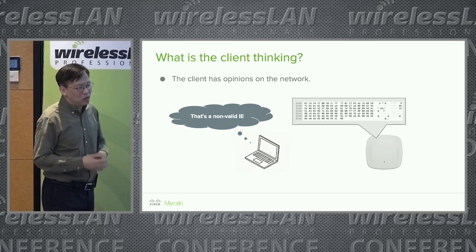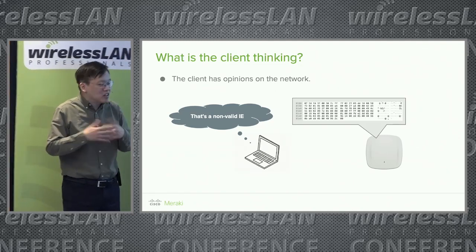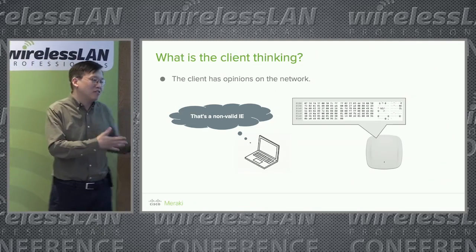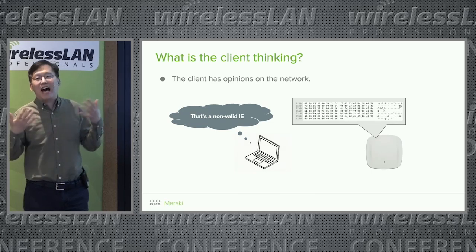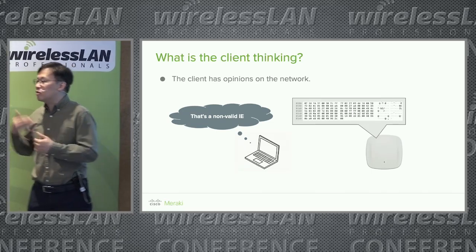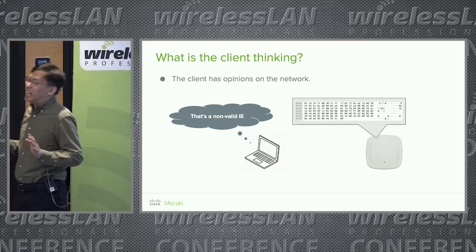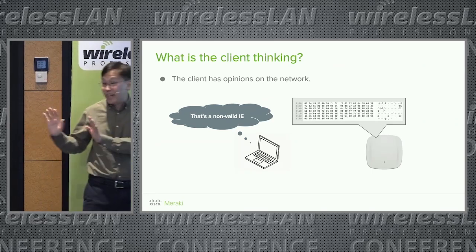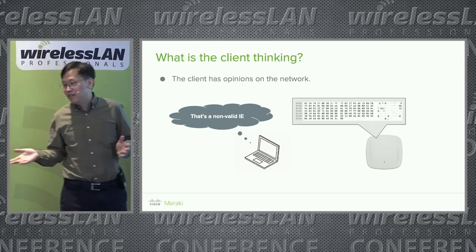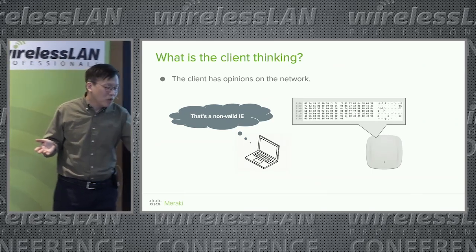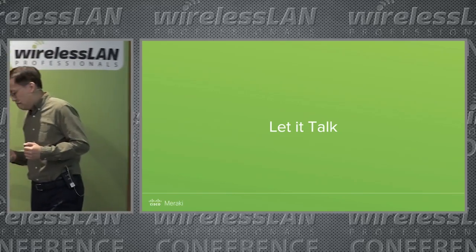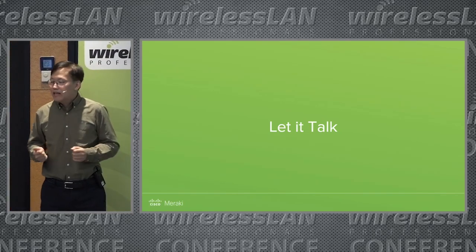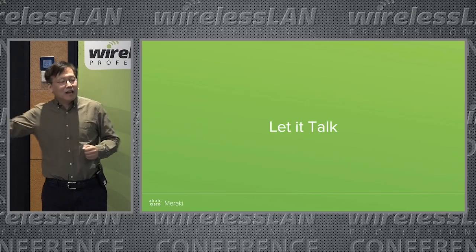We talk about WPA3 and WPA2 transition mode — why is there incompatibility? Why is SHA-256 incompatible? Because clients are built differently. They have IEs that we broadcast and announce, and they couldn't understand them — so they just back off from SAP and we never know until we get hit by it.